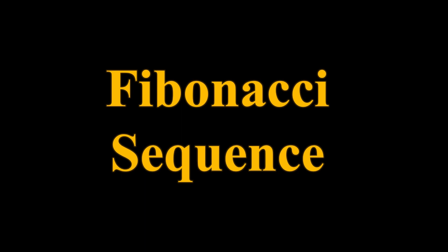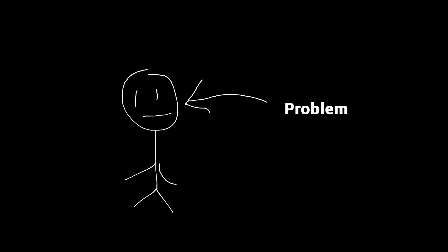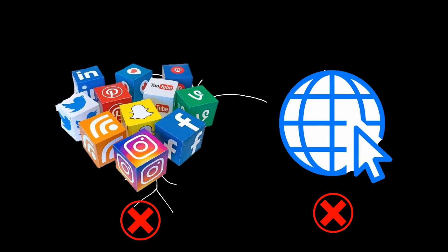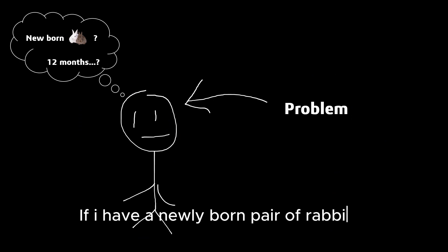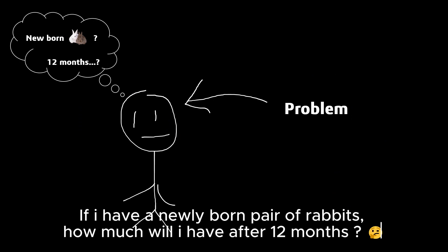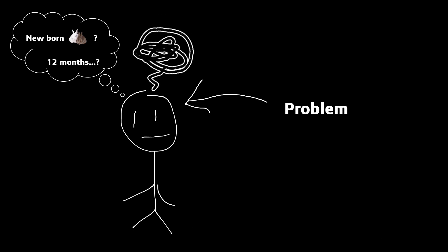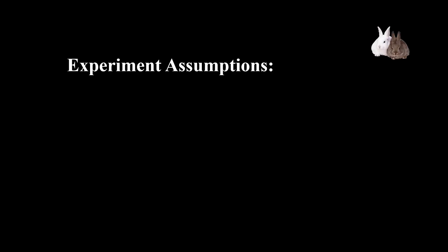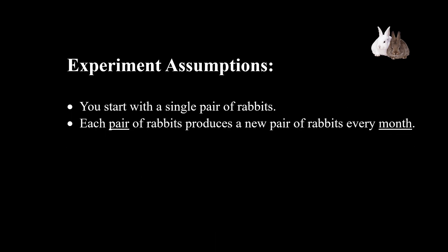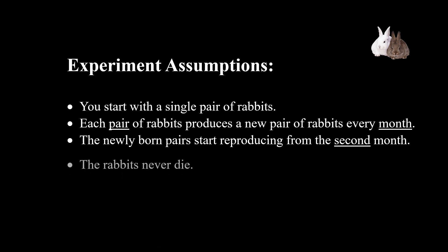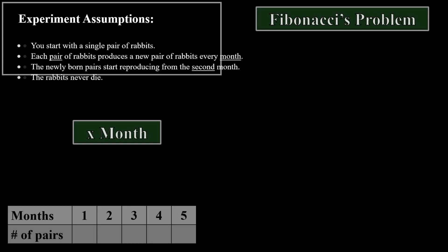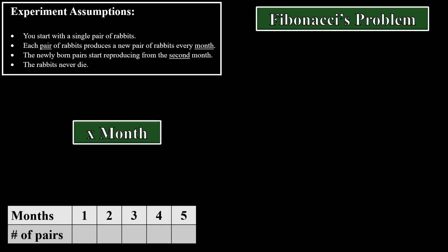The Fibonacci sequence. Let me tell you the story of some dude back in the 12th century. He had a problem. Problems back in the days looked a bit different — he didn't have social media or internet. This dude's problem was a bit special: he was wondering, if he had a newly born pair of rabbits, after 12 months, how many rabbits would he have? He set some assumptions: you start off with a young pair of rabbits, each pair reproduces a new one after every month, it takes exactly one month for a newly born pair to start reproducing, and rabbits never die — ideal environment, and so on.